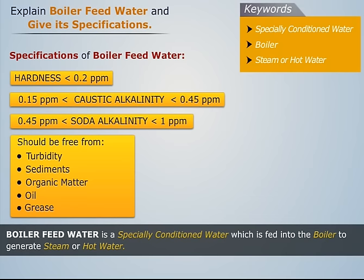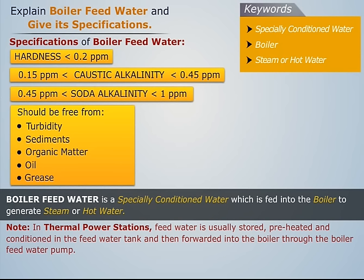In thermal power stations, feed water is usually stored, preheated, and conditioned in the feed water tank, and then forwarded into the boiler through the boiler feed water pump.